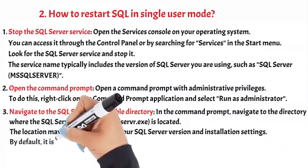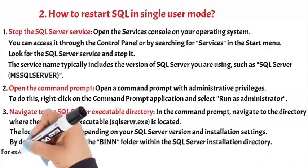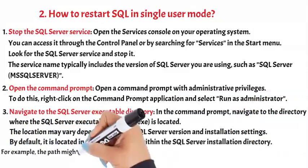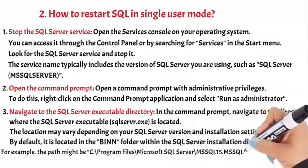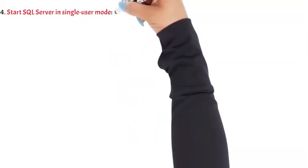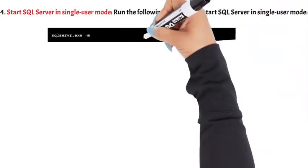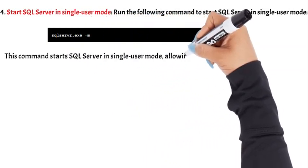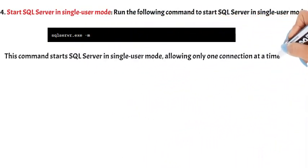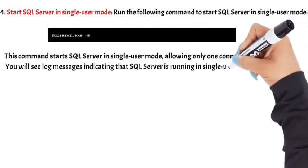By default, it is located in the bin folder within the SQL Server installation directory. For example, the path might be C:\Program Files\Microsoft SQL Server\MSSQL15.MSSQLSERVER\MSSQL\Binn. Step 4: Start SQL Server in Single User Mode. Run the following command to start SQL Server in Single User Mode. This command starts SQL Server in Single User Mode, allowing only one connection at a time. You will see log messages indicating that SQL Server is running in Single User Mode.